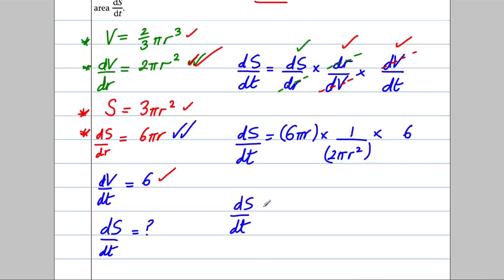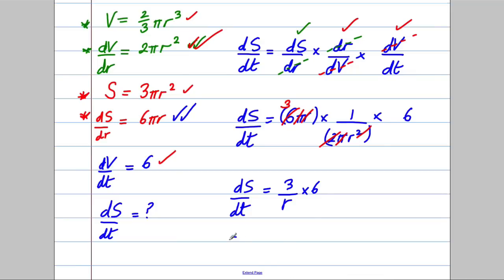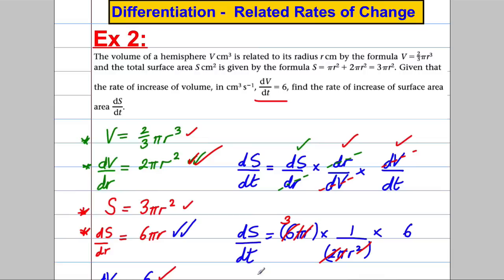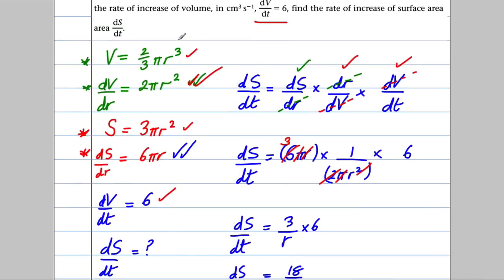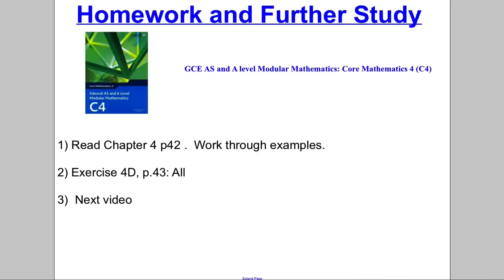Simplifying: the π cancels, one of the r's cancels, and the 2 cancels to give a 3, so we get 3/r × 6, meaning ds/dt = 18/r. We have found that the rate of increase of the surface area is 18/r. The key is to identify the formulas given, differentiate them, then be clever about how you combine them using the chain rule to get the right differential. Make sure you do the extra work to consolidate your learning. Thanks for watching.